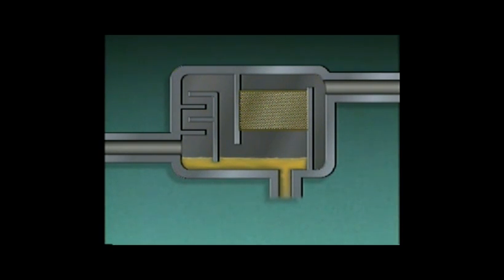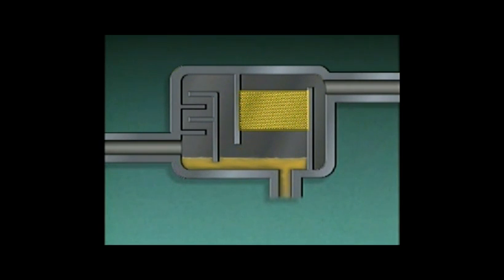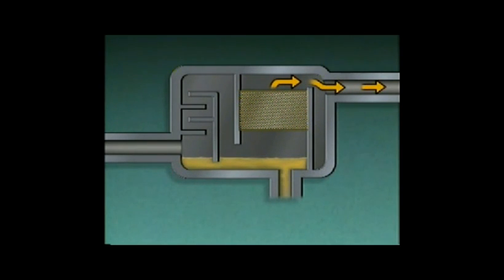After the gas passes the last baffle, it flows through the wire mesh screen. Most of the small amount of remaining oil is trapped by the screen and drips into the sump. The relatively oil-free gas then continues on through the outlet.